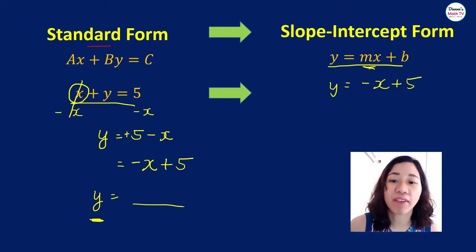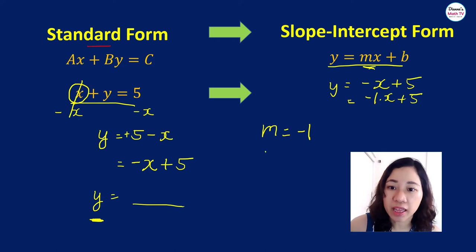So what is this saying? What is your m? It's the number multiplied to x. So what is that number multiplied to x here? It's negative 1, correct? Because negative x is the same as negative 1 times x plus 5. And then your b, in this case, is 5.